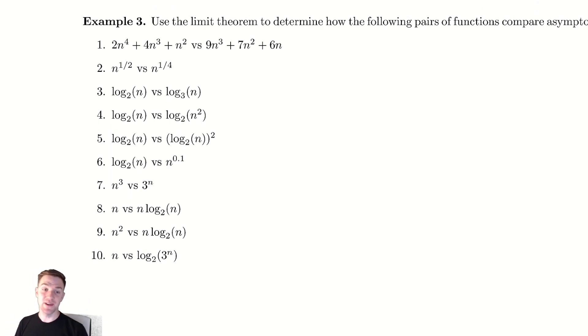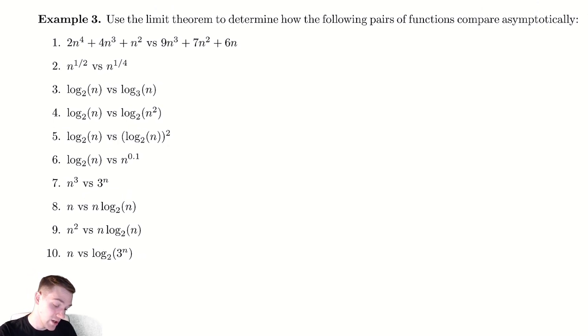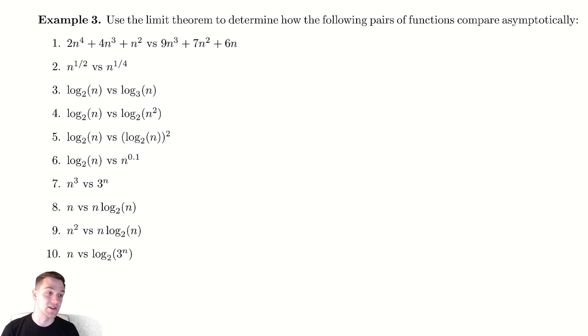Hello everyone. In this video we're going to be using the limit theorem to find out how several different pairs of functions compare to each other when using the limit theorem. If we look at the wording in this question, it says use the limit theorem to determine how the following pairs of functions compare asymptotically. To do that we're just going to evaluate a limit of one divided by the other. For my purposes I'm always going to use the first function as f of n and the second function as g of n. So let's start going through these.